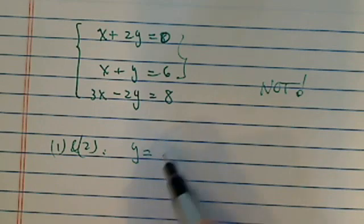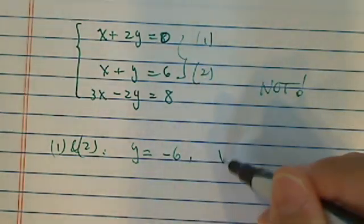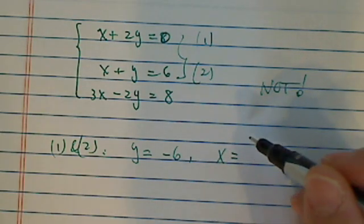y is equal to, here's 1 and here's 2. y is equal to minus 6, and because y is equal to minus 6, I have x is equal to 12.